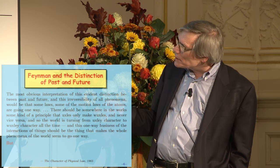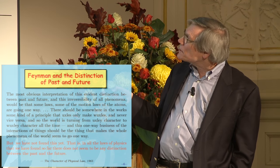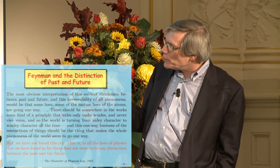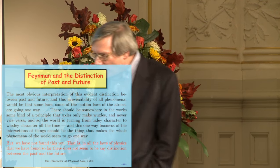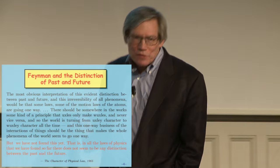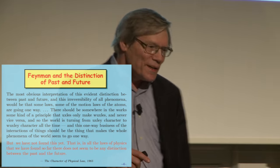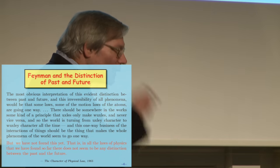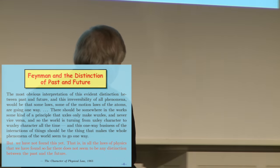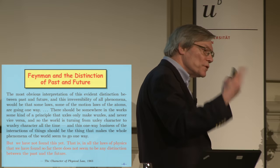But Feynman goes on to say we have not yet found this — in all the laws of physics that we have found so far, there does not seem to be any distinction between the past and the future. These comments were made very near the same time that CP violation was found. I think he would make the same statement after, thinking of CPT as a perfectly good symmetry that turns the future into the past.